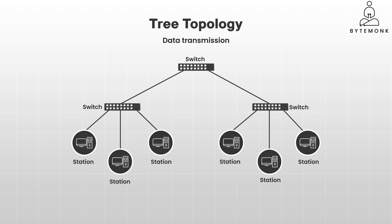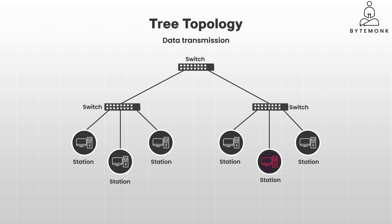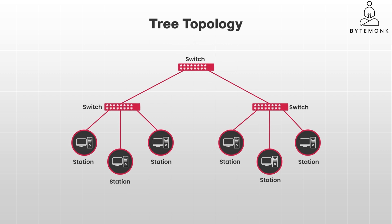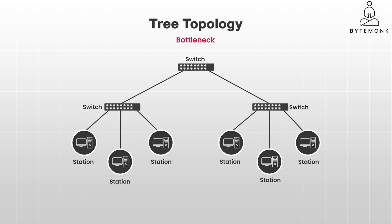Tree topology offers some key benefits. First, it's easy to expand — think of it like adding branches to a growing tree. Need more devices? Just plug them into existing nodes. Second, the hierarchical structure keeps things organized, like having a family tree of your network, making it easier to manage and troubleshoot. If one branch has a problem, it usually doesn't affect the rest of the network. However, tree topology can get complex as it grows, and the central root node is a crucial point — if it fails, the entire network can go down. Too much traffic through the root node can also create a bottleneck. Despite these trade-offs, tree topology is a solid option for large enterprise networks and university campuses that need structure, organization, and the flexibility to easily add new devices.